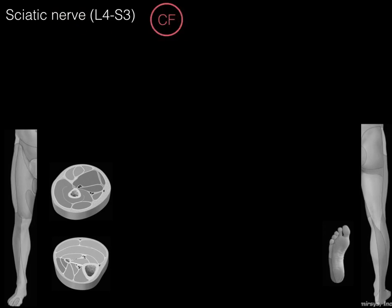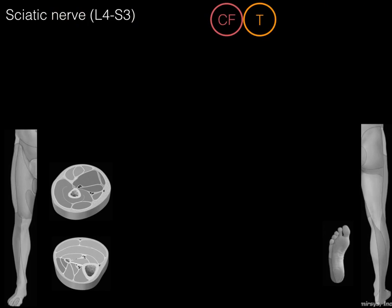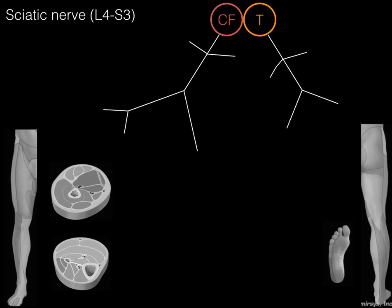To begin drawing the sciatic nerve, we need the two components. There's Clara Faye kissing Tim. Clara Faye has a body, Tim has a body. Clara Faye's got arms, Tim's got arms. Clara Faye's got legs, Tim's got legs. And then we need to draw feet on there as well.